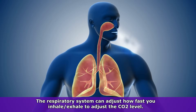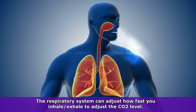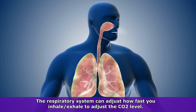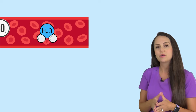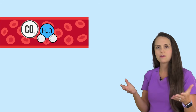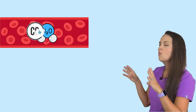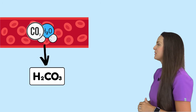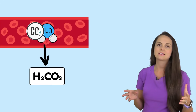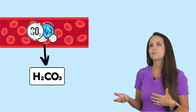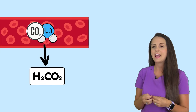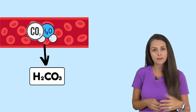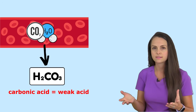Your respiratory system can adjust how fast you inhale or exhale to tweak that carbon dioxide level. Once carbon dioxide hits the blood, it will bind with water — because your blood contains water. So you have carbon dioxide binding with water, and if we're not having a lot of carbon dioxide binding with water, we're really going to affect carbonic acid levels.